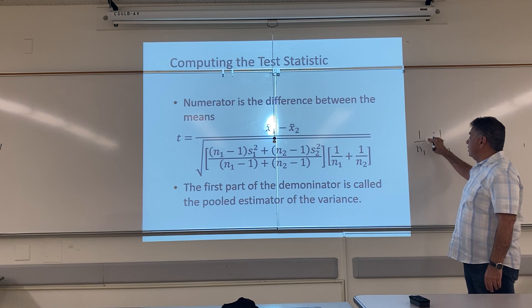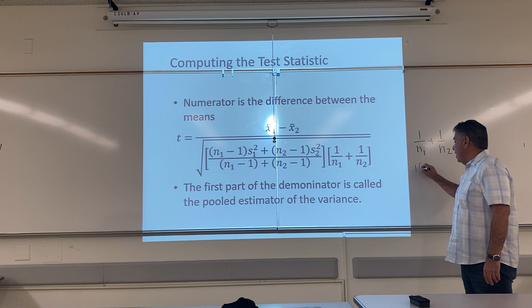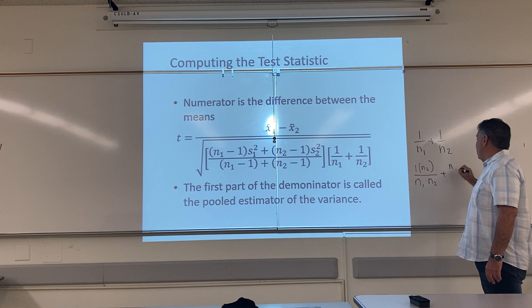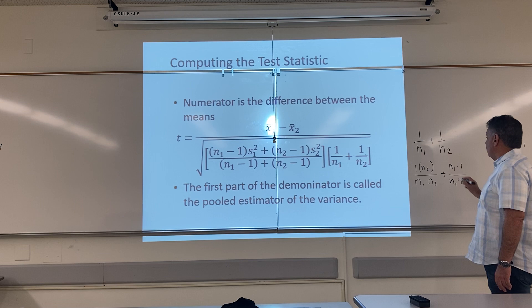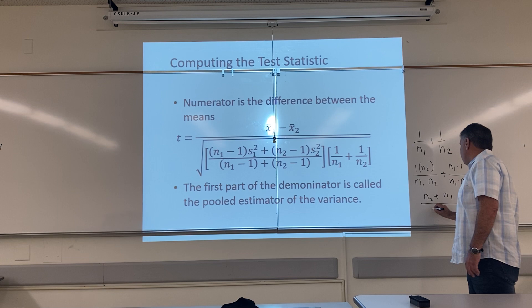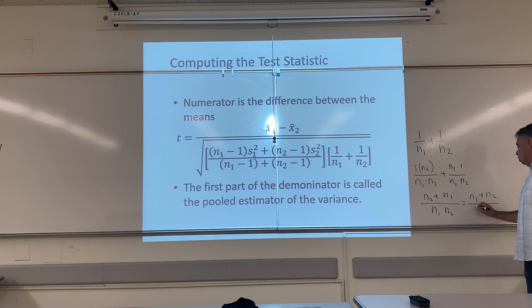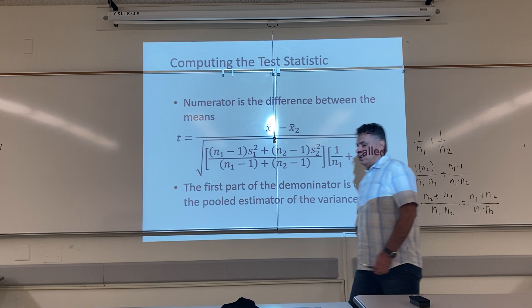We're going to multiply the top and bottom of the first fraction by n2, so this becomes one times n2 over n1 times n2. Then we multiply the top and bottom of the second fraction by n1, so we have n1 times one over n1 times n2. So this equals n2 plus n1 all over n1 times n2, because now they both have the same common denominator. Since the order of addition doesn't matter, I can rewrite this as n1 plus n2 all over n1 times n2. That explains why this looks a little different.